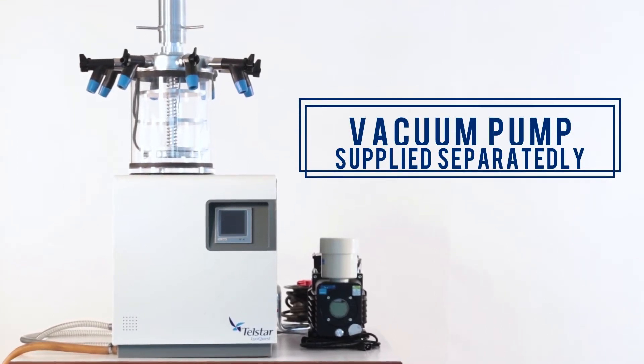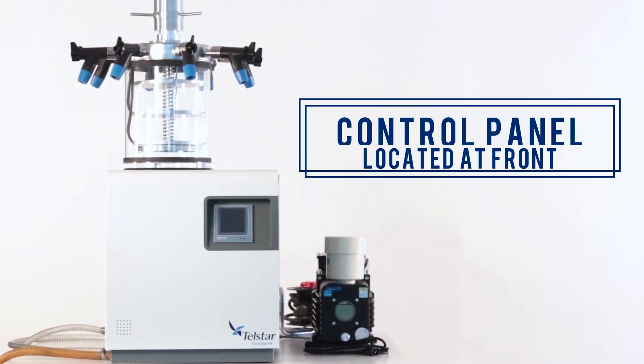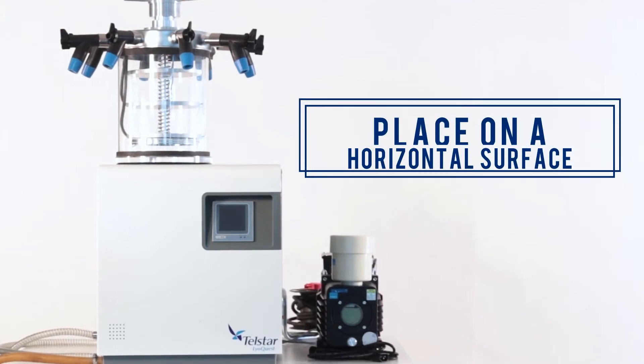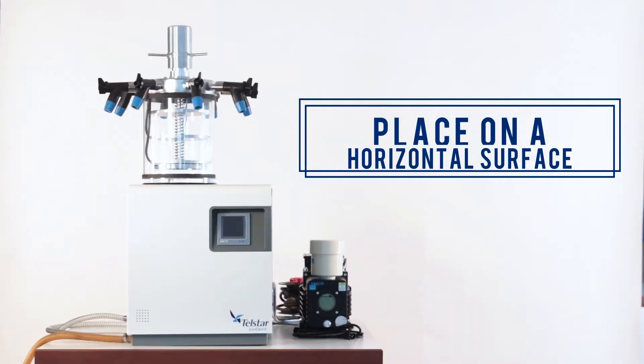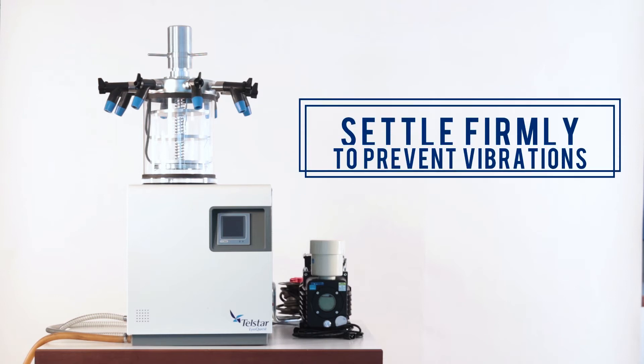The vacuum pump is supplied separately as an optional. The control panel is located at the front. The unit must be placed on a table with a smooth horizontal surface. The basic unit must be firmly settled to prevent vibrations.